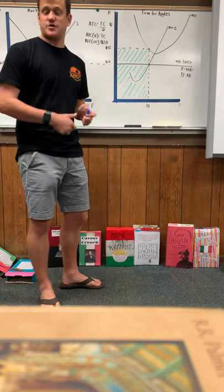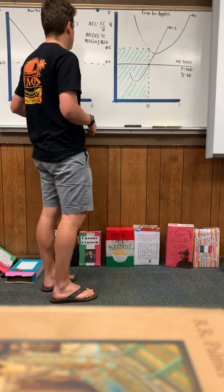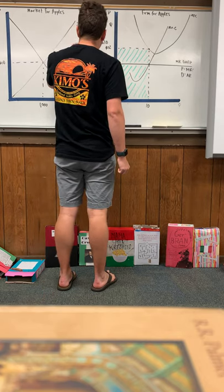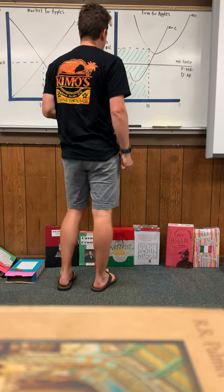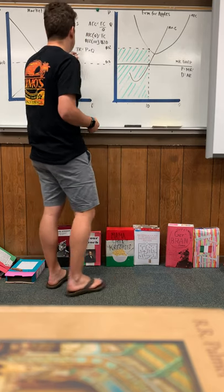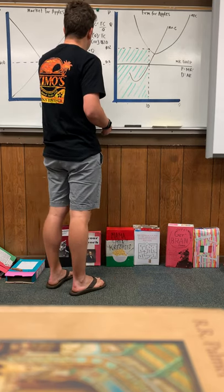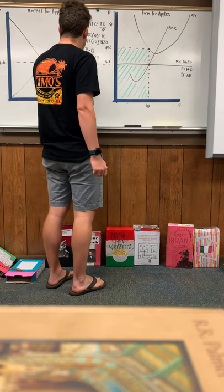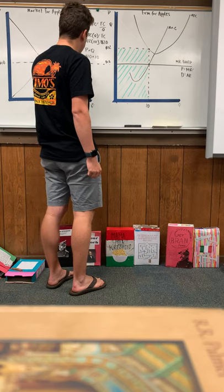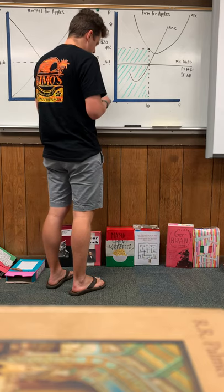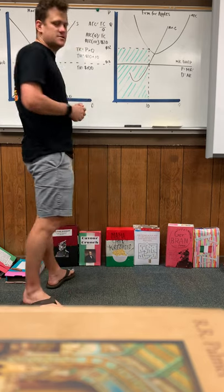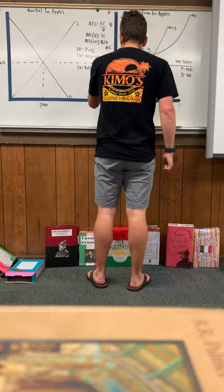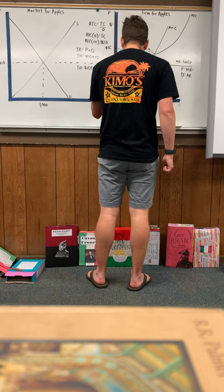Total revenue equals price times quantity. Our price is $10 and we're producing 10 items, so total revenue equals $100. That is represented by the blue shaded region on the firm graph.